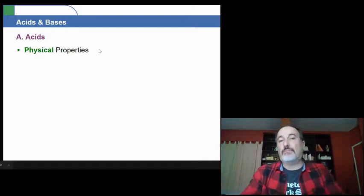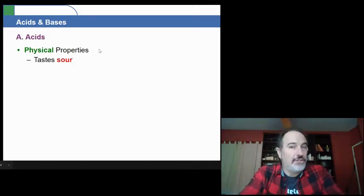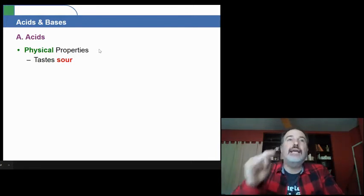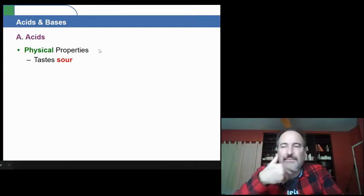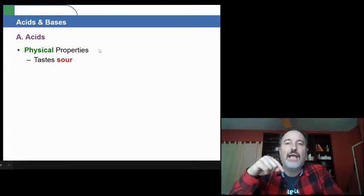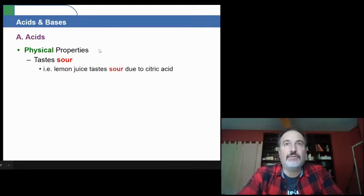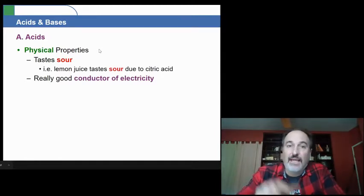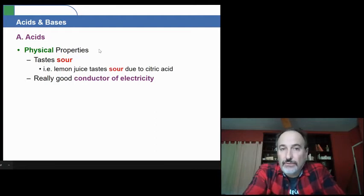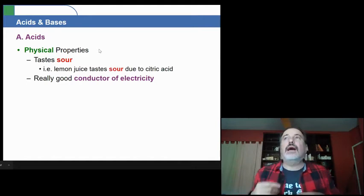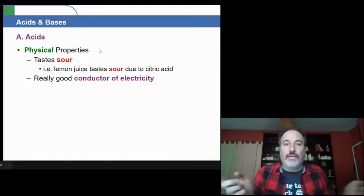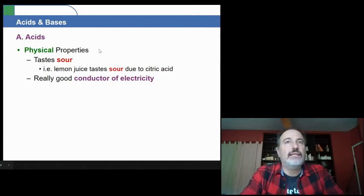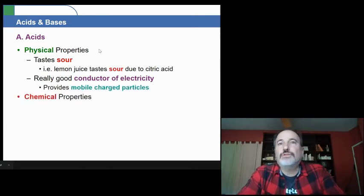Now, acids have certain physical properties. First of all, they taste sour. Not that I want you guys going around tasting things in the lab, but the sour flavor that anything has is because it is an acid. So when you have lemon or something like that, citric acid is what causes lemons to have that sour flavor. And the second thing is that they tend to be really good conductors of electricity.